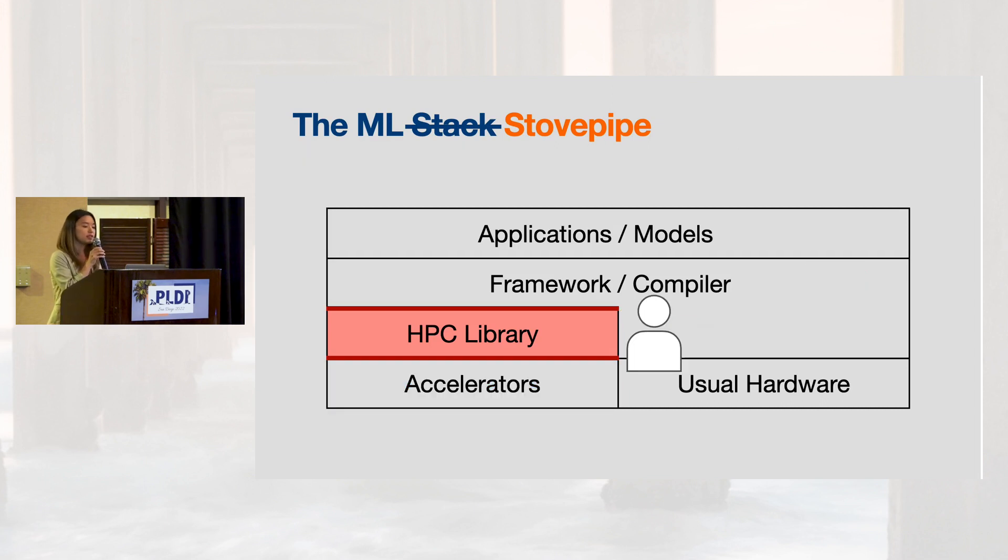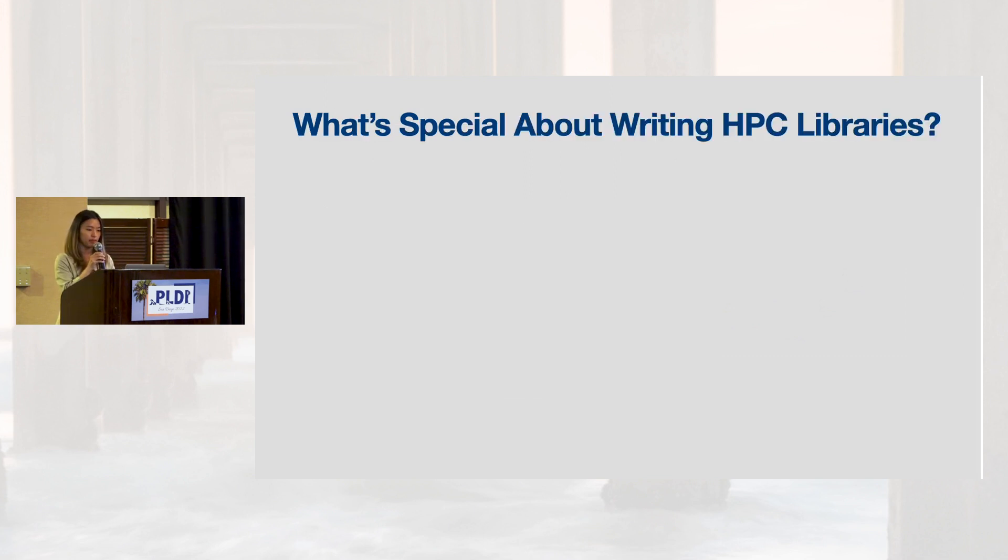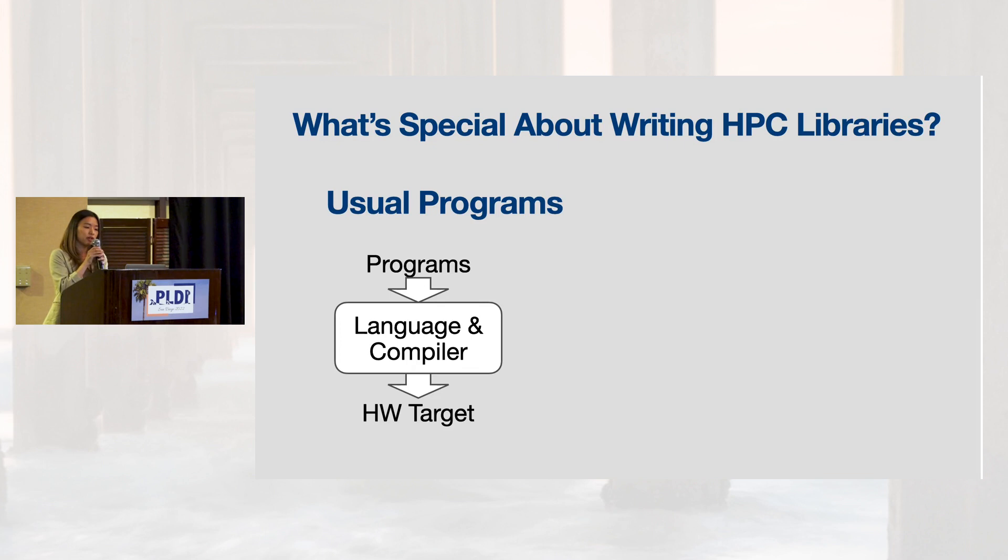However, there is surprisingly little work on programming languages to help performance engineers write these libraries. So what is so special about writing HPC libraries? In usual programs, we expect user code to change rapidly as a programmer develops software, while the hardware ISA changes very infrequently. In this system, the responsibility of targeting new hardware is on compiler writers.